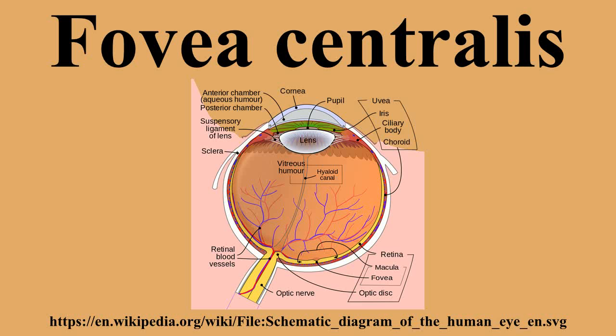The center of the fovea is the foveola, about 0.2 mm in diameter, or central pit where only cone photoreceptors are present and there are virtually no rods. The central fovea consists of very compact cones, thinner and more rod-like in appearance than cones elsewhere. These cones are very densely packed. Starting at the outskirts of the fovea, however, rods gradually appear.